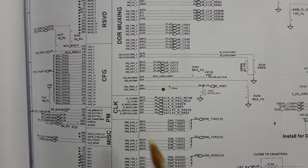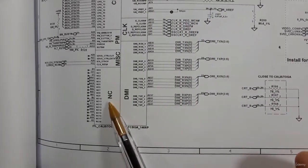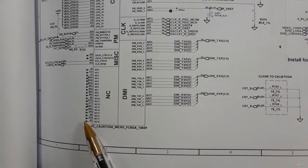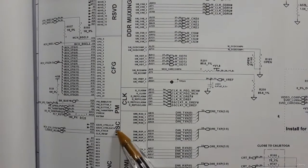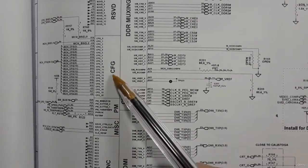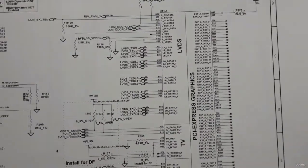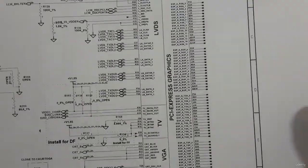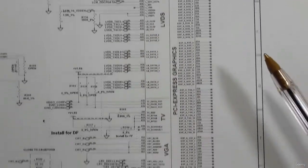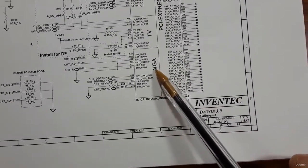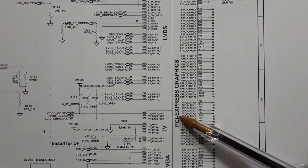Here we have the clock — this is the clock part. NC means not connected or not used. We have here MI, CPM, CFG, DDR, and so on. In the output section, we have the LVDS, which is for the monitor or screen, TV output, and visual output. We also have PCIe Express graphics controls.